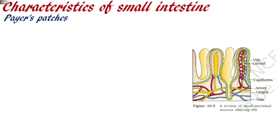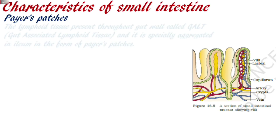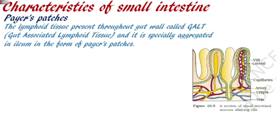Point number one is Peyer's patches. Peyer's patches are present in the ileum. The ileum is the third portion of the small intestine — it is the last portion, the longest portion, and the highly coiled portion. Now, in our whole alimentary canal — the whole gut — lymphoid tissues are present.